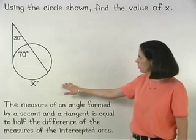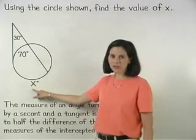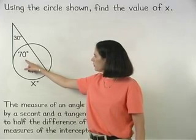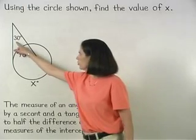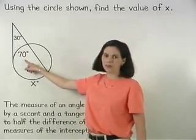And in the diagram shown, since the measures of the intercepted arcs are x degrees and 70 degrees, we can set up the equation 30 equals one-half times x minus 70.